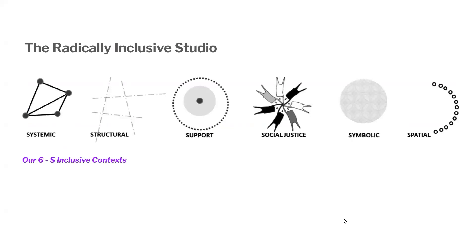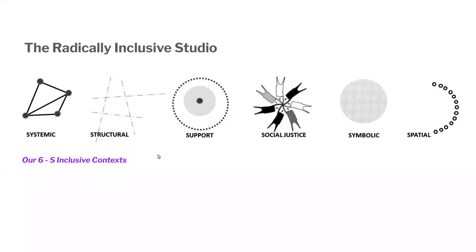The design studio reproduces the social hierarchies of the profession, and we look to address the inequities revealed by the global pandemic. This has given us the opportunity to rethink the norms of the architecture and design studio through the six inclusive contexts. Drawing on Williams et al's inclusive excellence framework, we formulated a 6S framework for inclusive contexts: namely systemic, structural, support, social justice, symbolic and spatial.